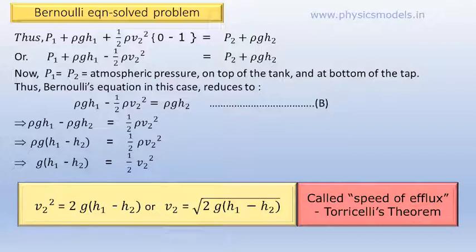Now, P1 is equal to P2 is an important thing here because both the top of the tank and the bottom of the tap are facing atmospheric pressure. Therefore, the equation simplifies to ρgh1 - ½ρv2² = ρgh2. This is equation B.